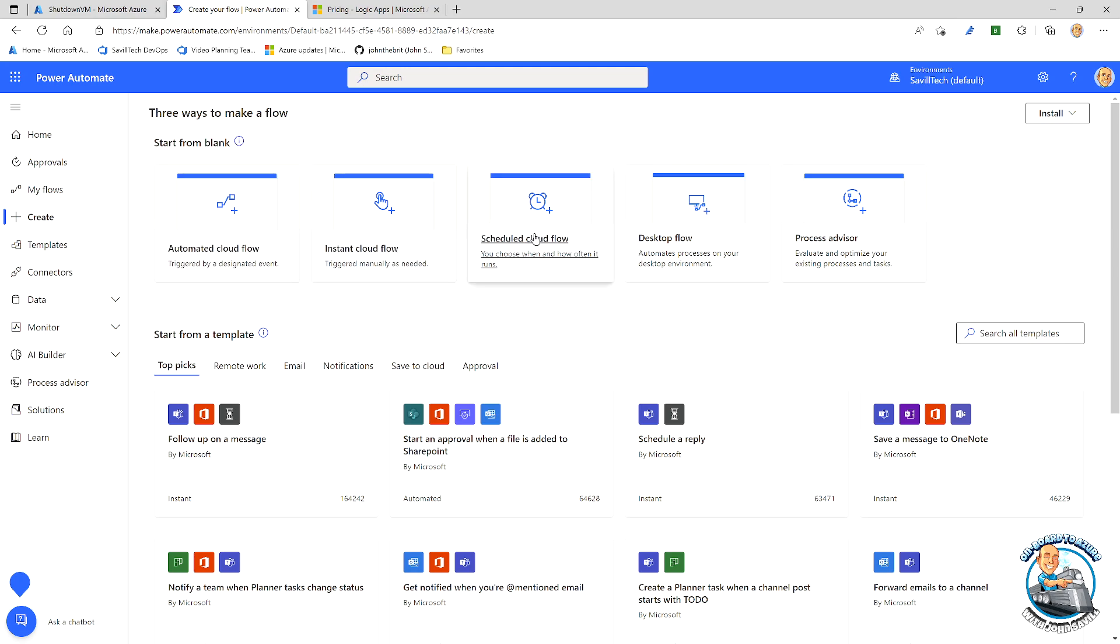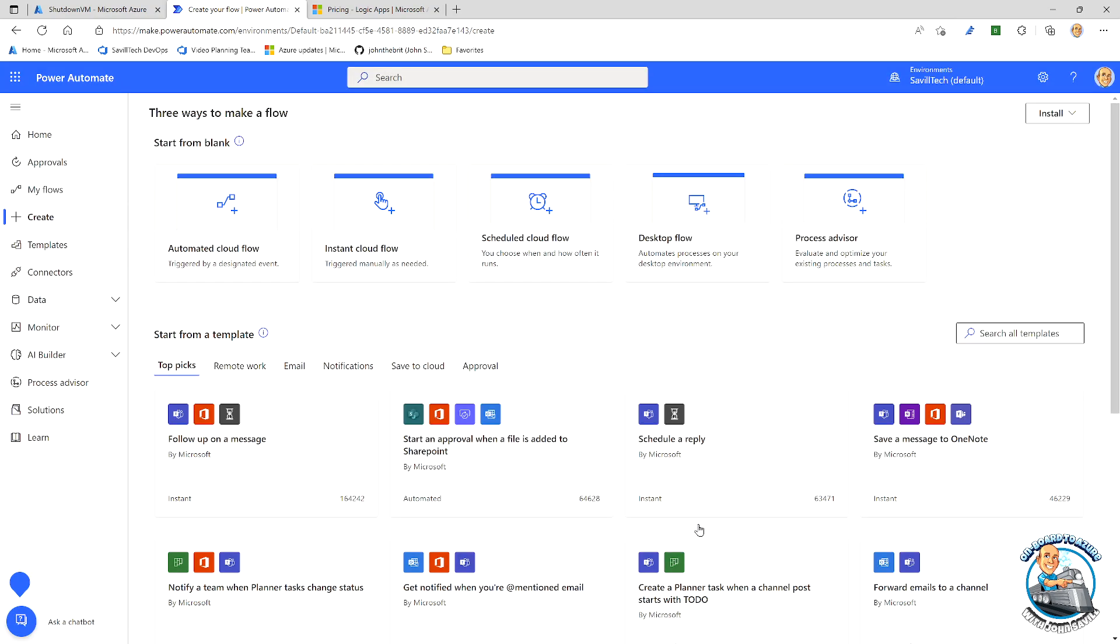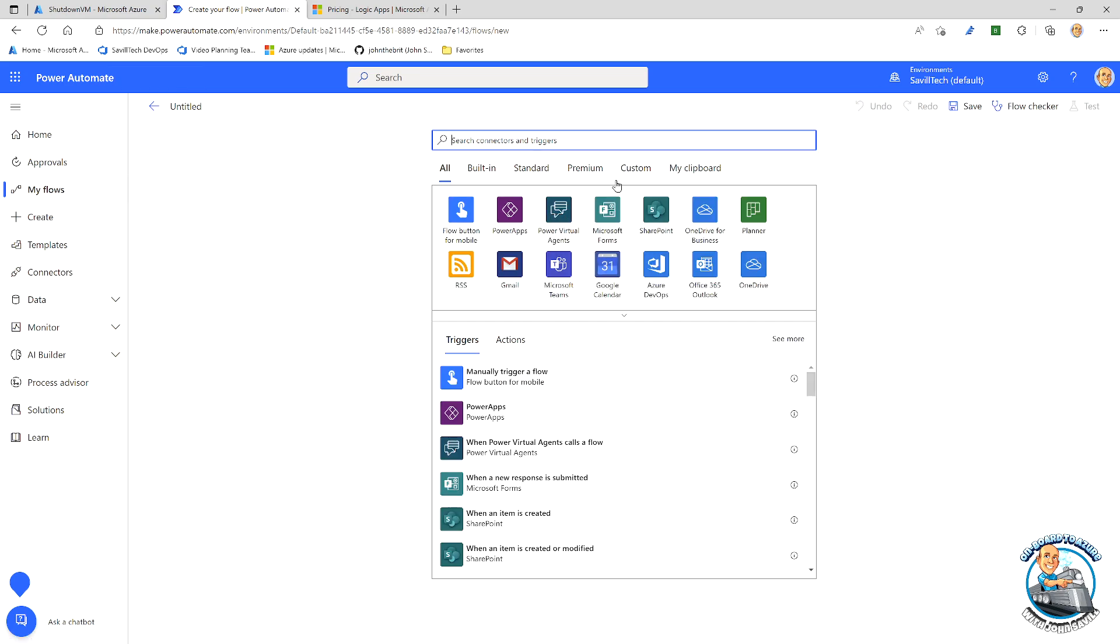If I want to start from blank, well, what's going to trigger this? Okay, maybe it's a schedule. I can put in the schedule. I'm just going to do skip for now.